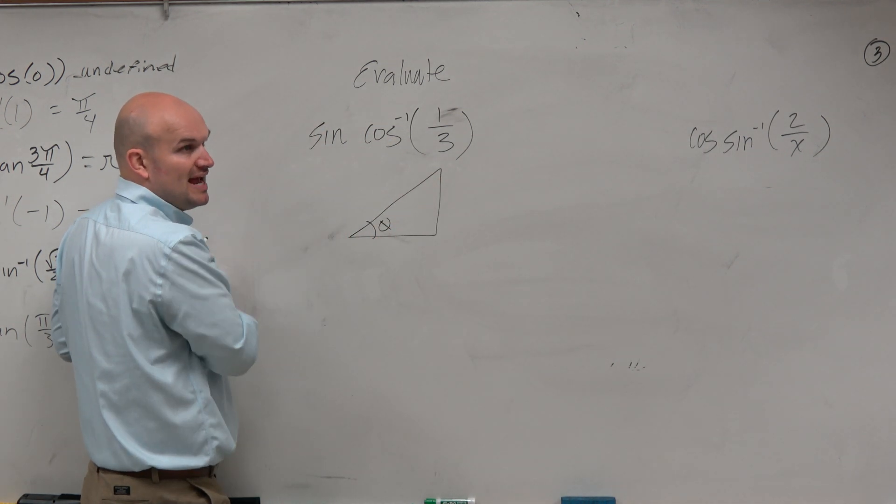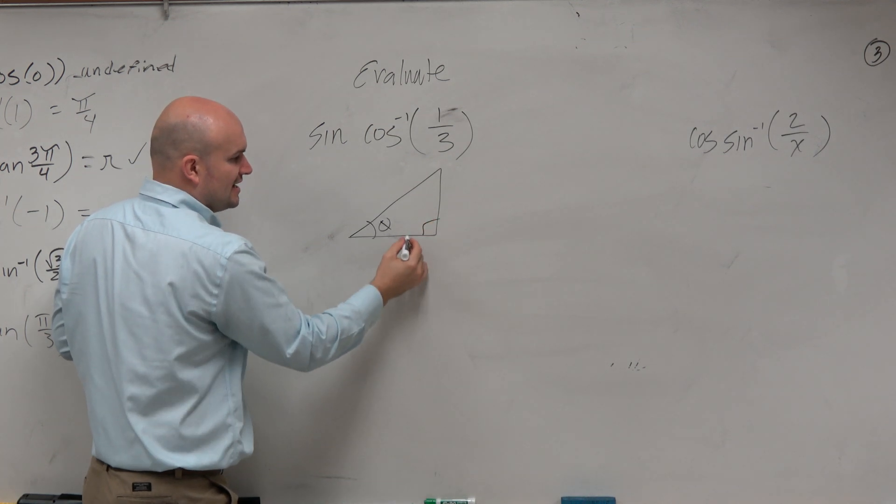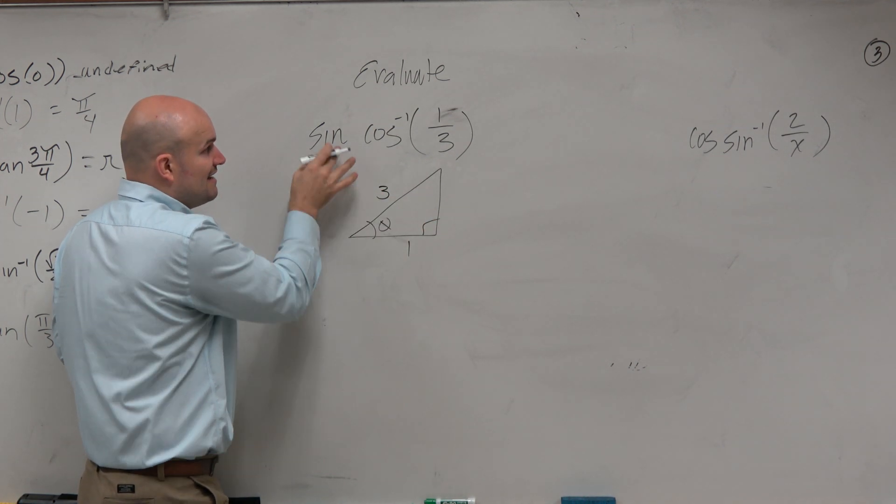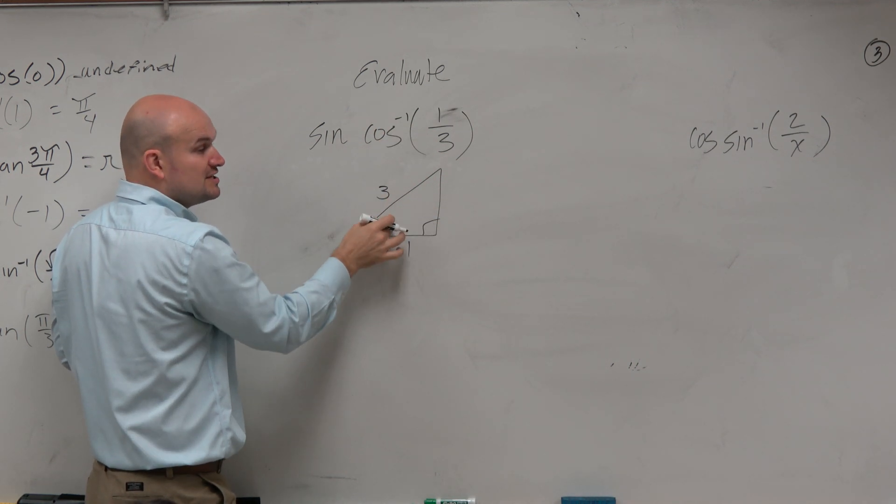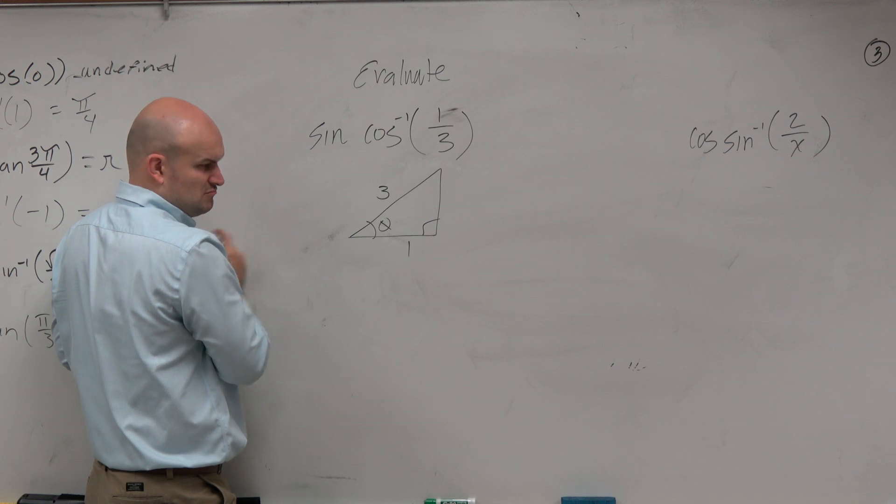Let's just call this unknown angle theta. If I have the cosine of 1 over 3, could I find the sine of this triangle now? Cosine inverse gives me the triangle of this unknown theta. Can I now find the sine of this? Sure.